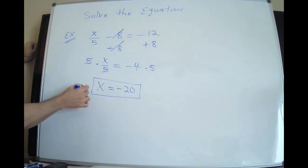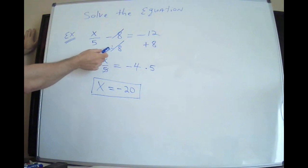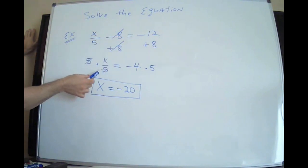It works. Negative 20 divided by 5 is negative 4. Negative 4 take away 8 is negative 12. So, again, add 8 to eliminate the negative 8 to both sides. And you have to multiply by 5 to get rid of the 5 that you have on the bottom. The opposite of division is multiplication.